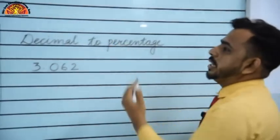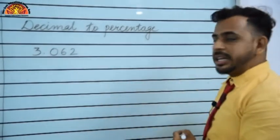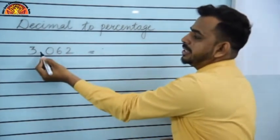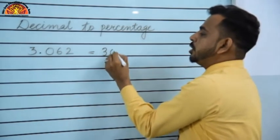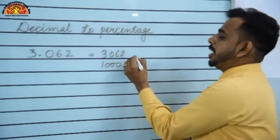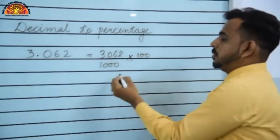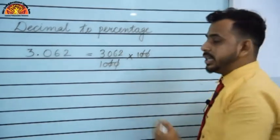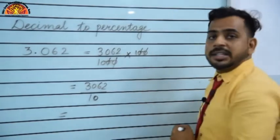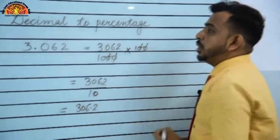Now, converting decimal to percentage — exercise question. Convert 0.3062 to percentage. This decimal has 4 digits, so denominator is 1000 (3 digits after decimal → 1000). Convert: 3062/1000 × 100. Cancel two zeros — 3062/10. Dividing: decimal shifts 1 place → result is 306.2. Put the percentage sign — answer is 306.2%.